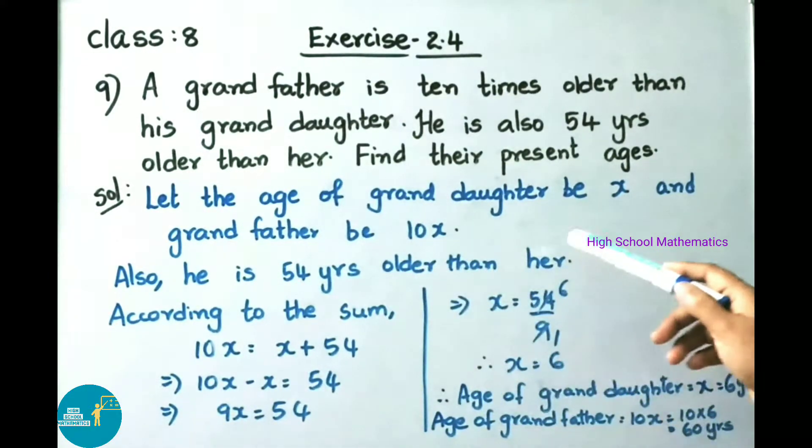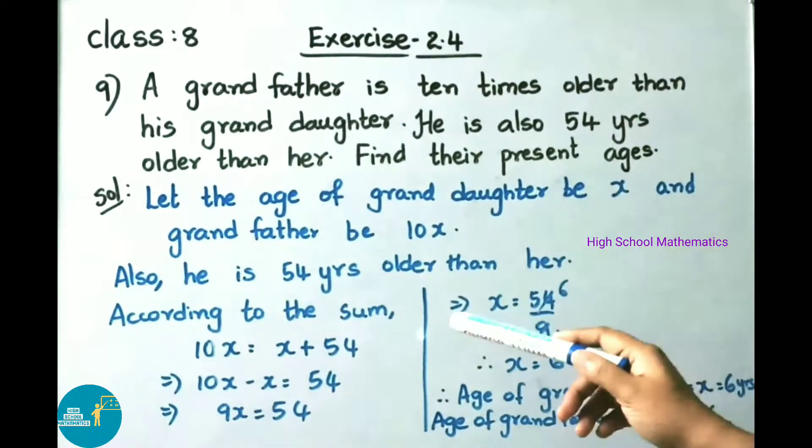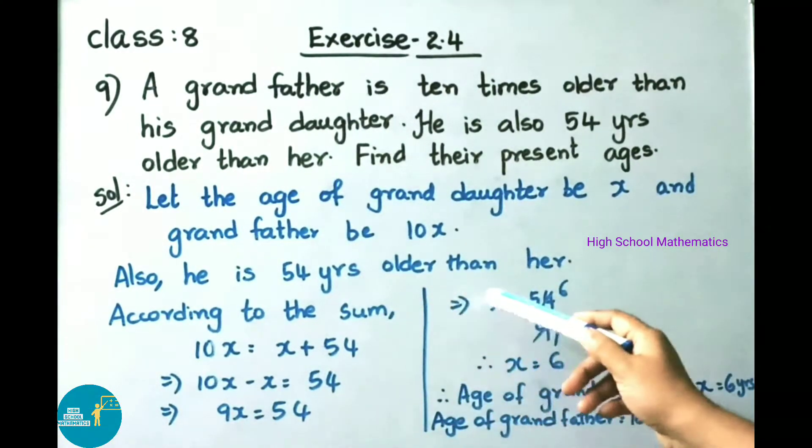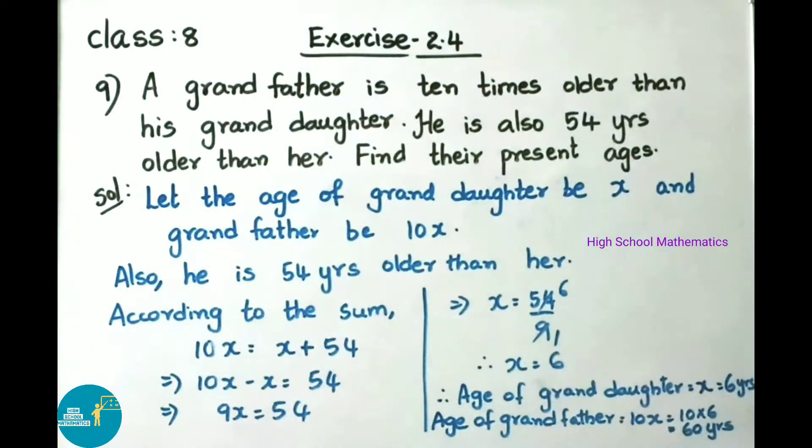Let the age of granddaughter be x and grandfather be 10x. Also, he is 54 years older than her. According to the sum,